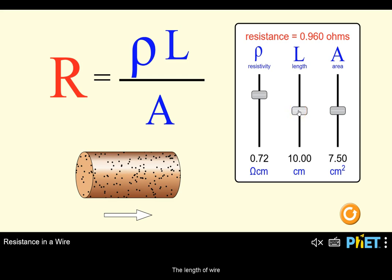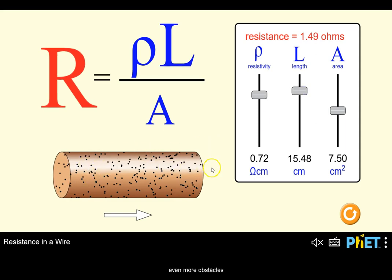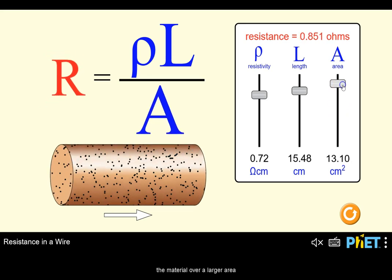The length of wire just adds even more obstacles to overcome. But spreading out the material over a larger area means that the electrons flowing through the wire have more paths to flow, which reduces resistance.